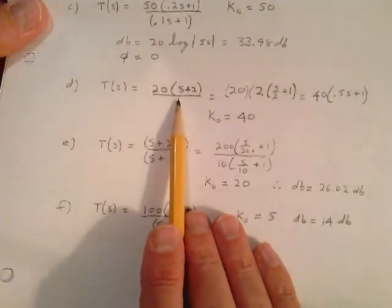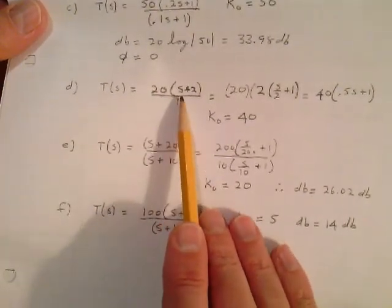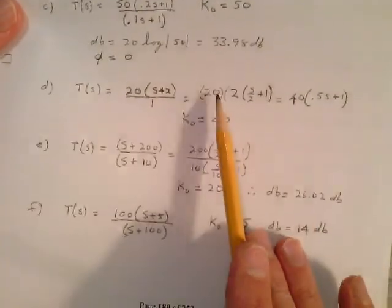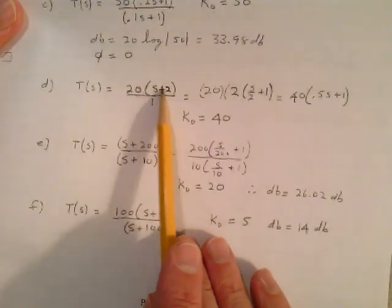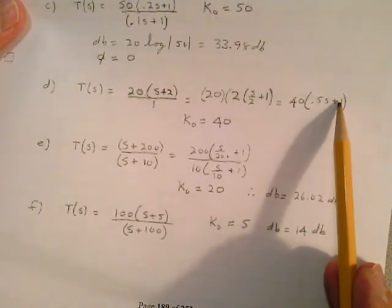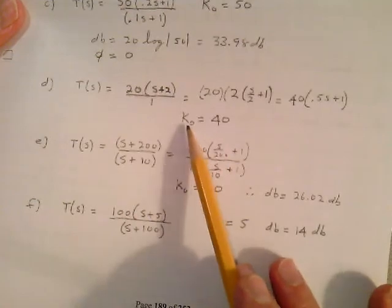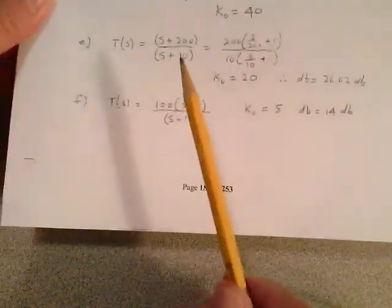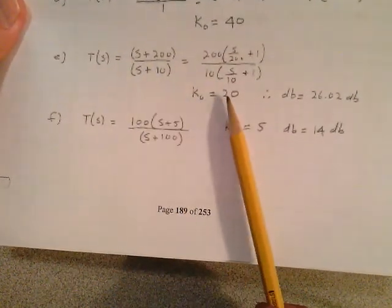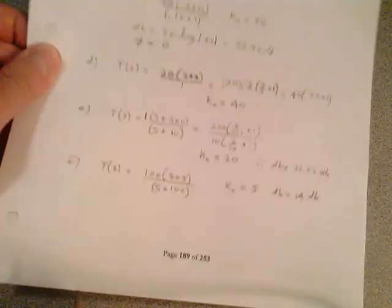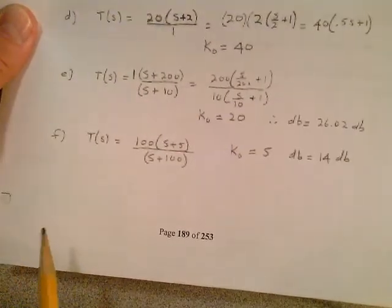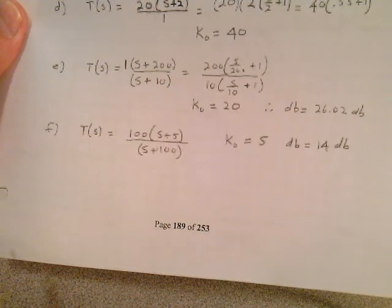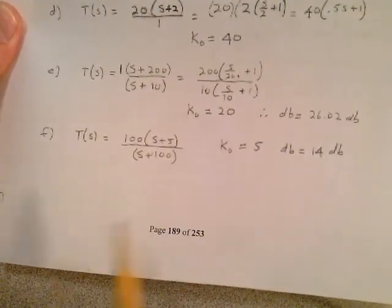For a transfer function in break frequency form — say 20 times the quantity S plus 2 — you have to get it into break frequency form by bringing out the 2: you get 40 times (0.5S plus 1). Now you can extract K0 as 40. Take 20 times the log of 40 for your dB value; the angle is zero. Another example: if it's already in break frequency form with a K0 of 20, the dB is 26.02 dB. And for another example, K0 equals 5, so the dB is 14 dB.